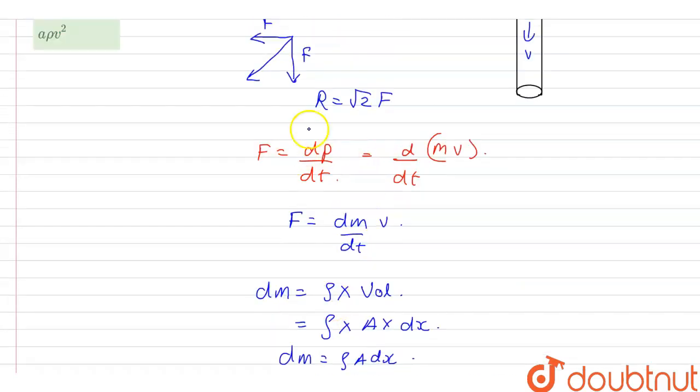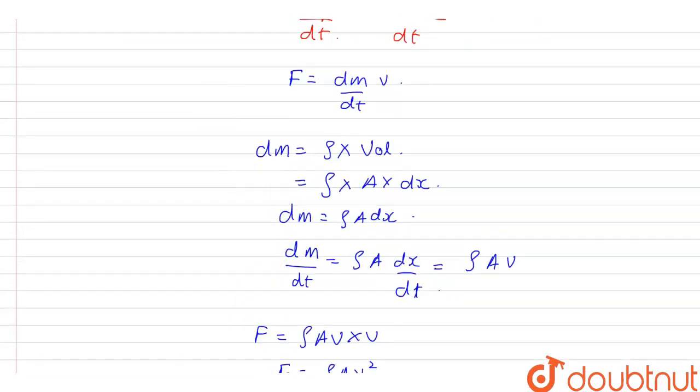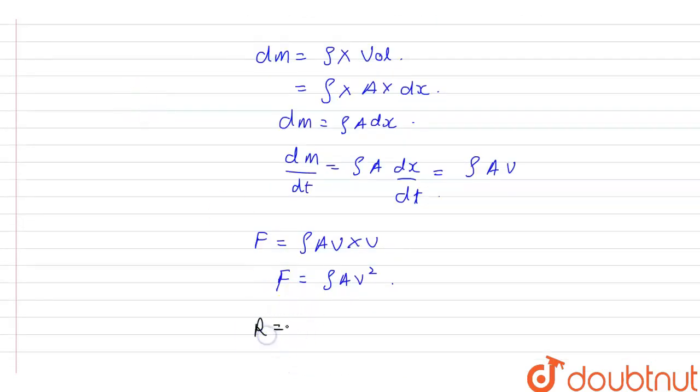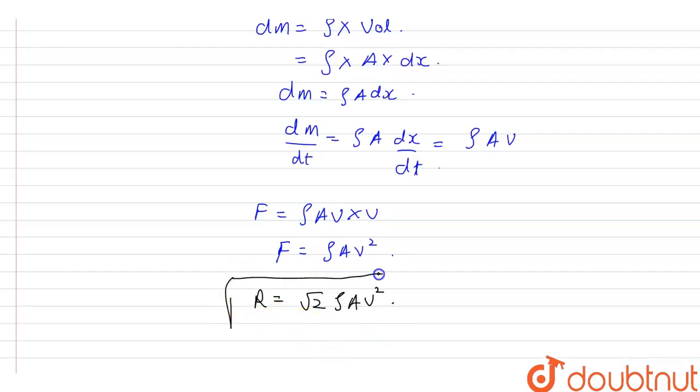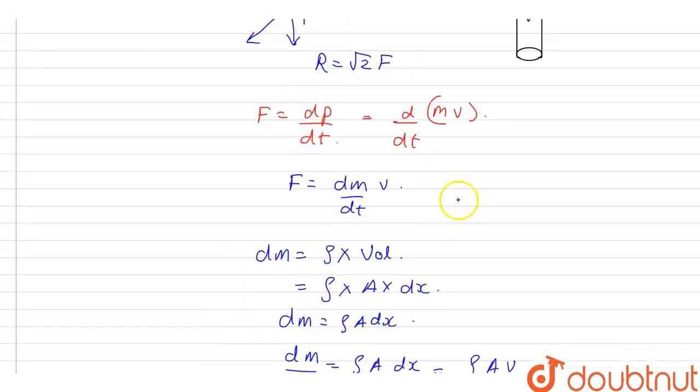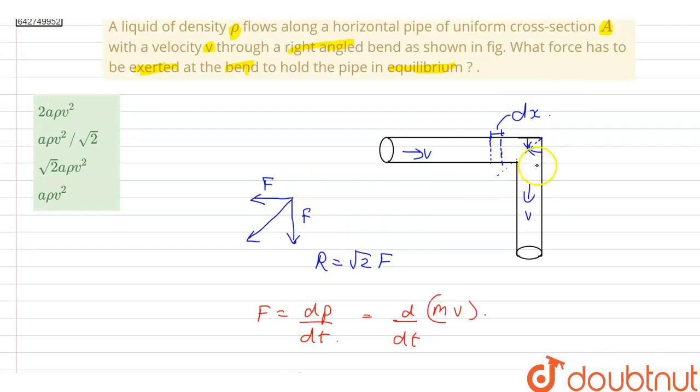So that means resultant force R will be equal to √2 times F. So F is ρAV². So this will be the force which we have to exert on this pipe to keep it in equilibrium.